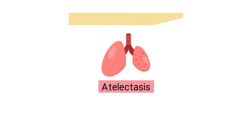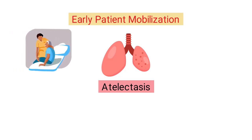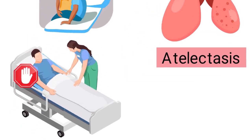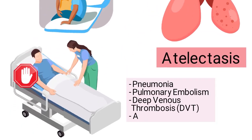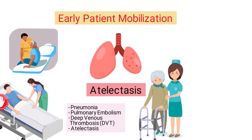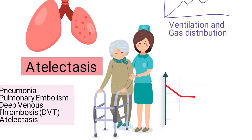One of the best ways to prevent atelectasis is through early patient mobilization. This means that patients should be encouraged to get out of bed and move around as soon as possible after surgery. Prolonged bed rest is linked to an increased risk of several complications including pneumonia, pulmonary embolism, deep venous thrombosis, and atelectasis. However, early ambulation improves ventilation and gas distribution, which decreases the risk of alveolar collapse.